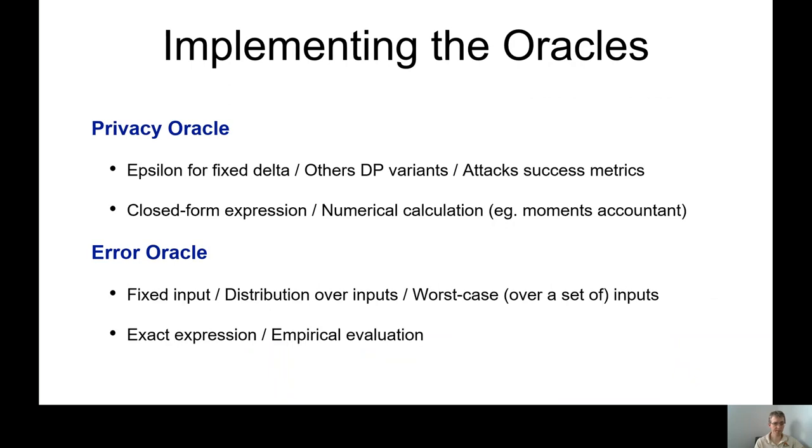And now, a little bit of a note on the implementation of the oracles. For the privacy oracle, there's a couple of things you can try. You can try to get epsilon for a fixed delta, you can also try other variants of differential privacy, or you can use some attack success metrics. On top of that, you may have your privacy measure available in closed form, or you might have to do some numerical calculations for it. We used something called Moments Accountant in our work, which is an example of a numerical calculations approach.